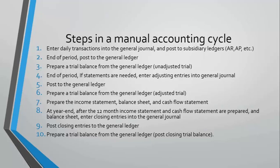By the end of the accounting period in a manual system — which could be monthly, quarterly, or yearly — we move that data over to the general ledger so we can get an ending balance for each of the different ledger accounts. The third step is to check the math and make sure the debit balance accounts equal the credit balance accounts, so we prepare an unadjusted trial balance.